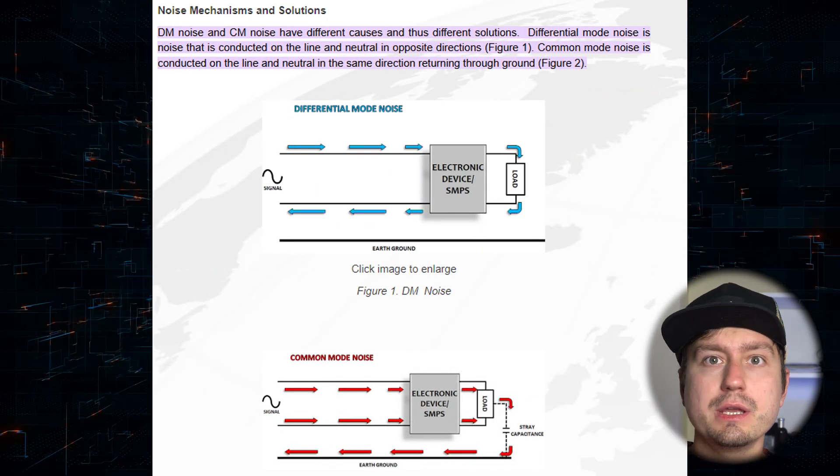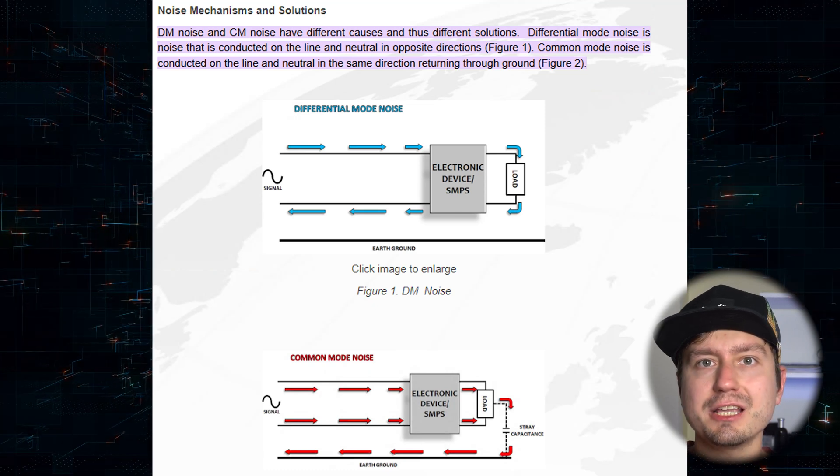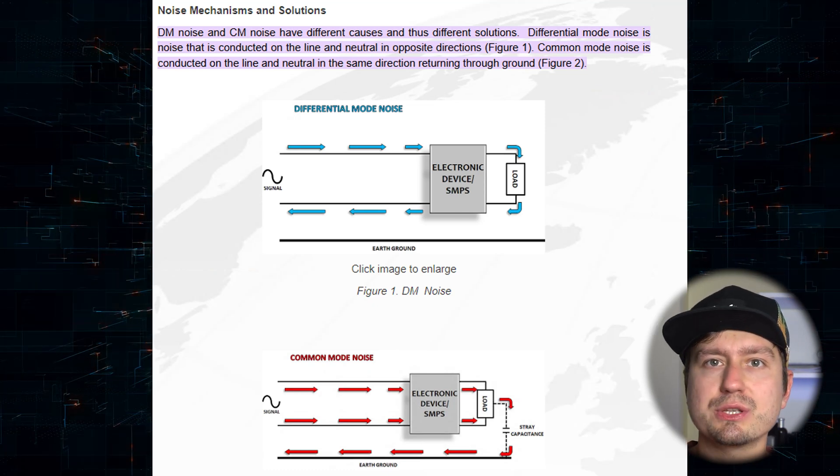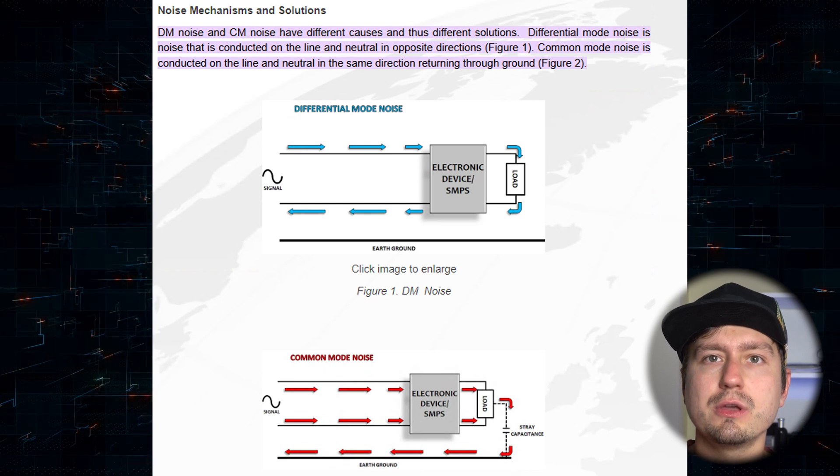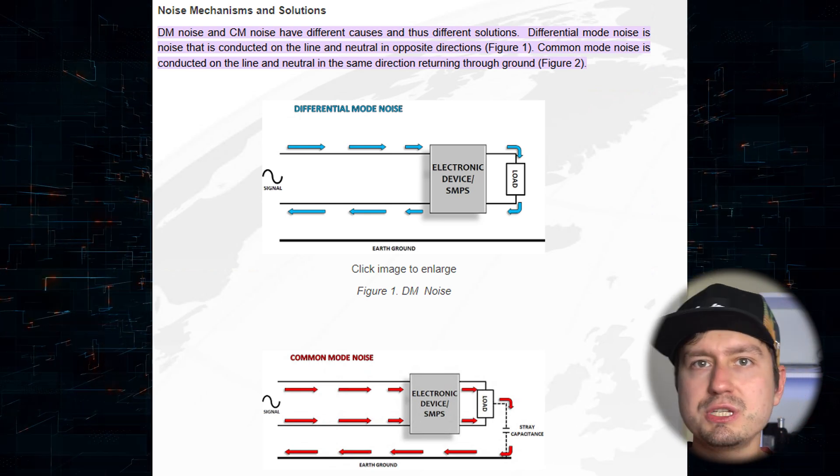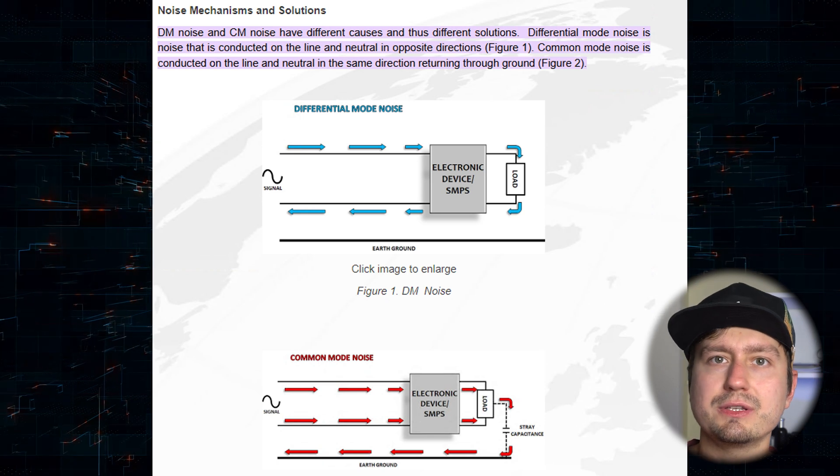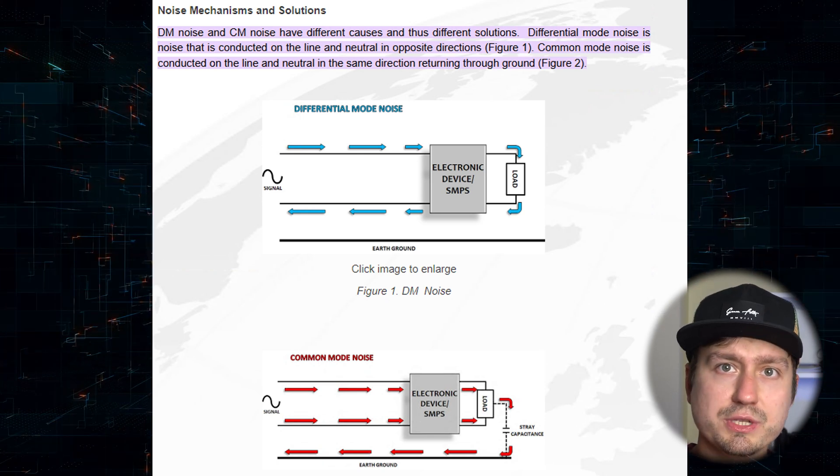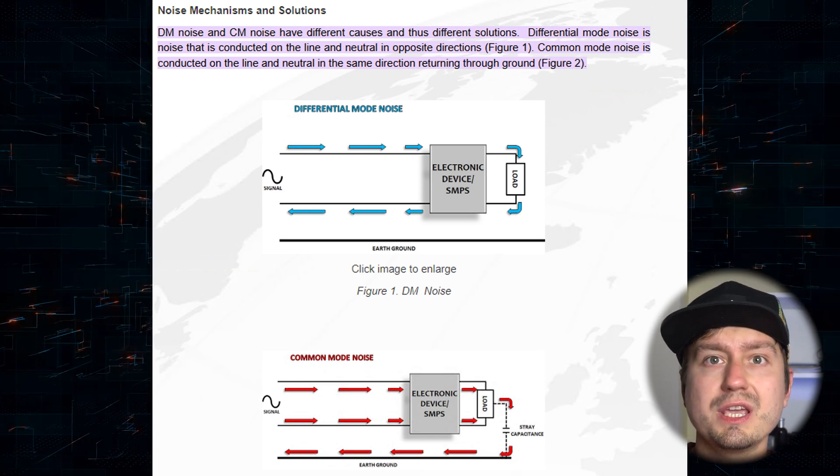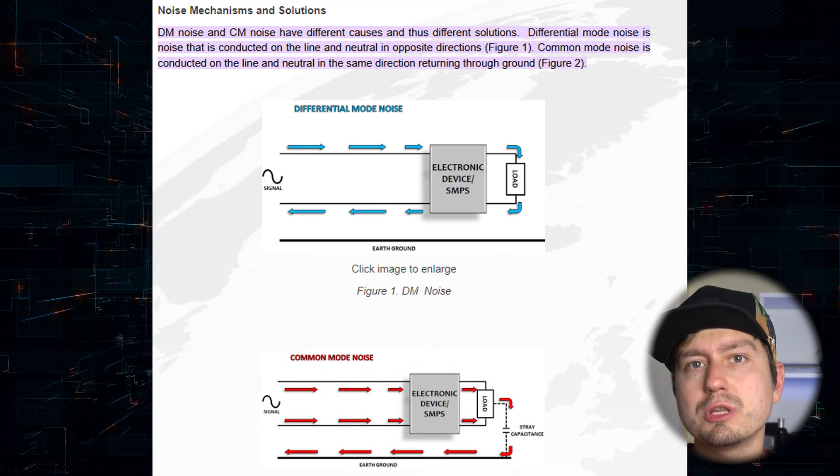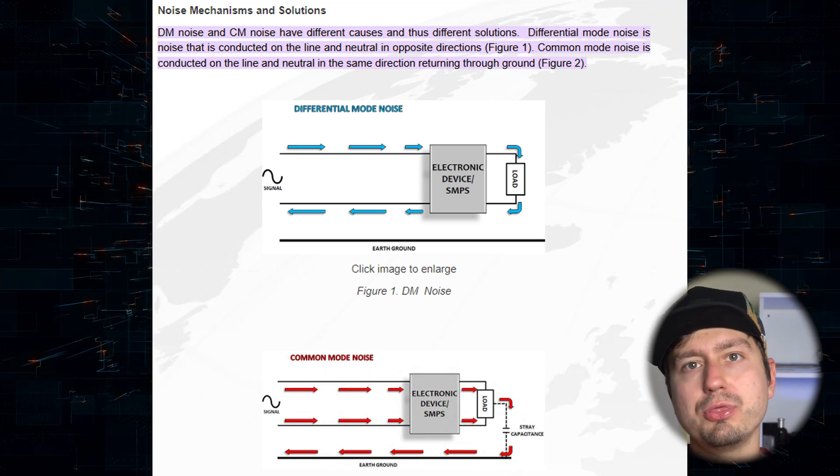With the conducted emissions there are two types of noise that we need to care about. The first one is the common mode noise, which is a type of noise that would be present on both conductors equally, on positive and neutral conductor. Whereas the other type is differential mode noise, which is only present on one conductor but not on the other.